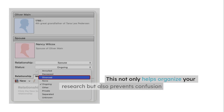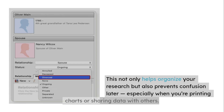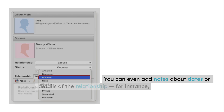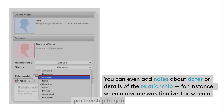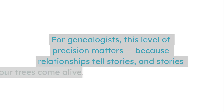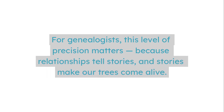This not only helps organize your research, but also prevents confusion later, especially when you're printing charts or sharing data with others. You can even add notes about dates or details of the relationship — for instance, when a divorce was finalized or when a partnership began. For genealogists, this level of precision matters, because relationships tell stories, and stories make our trees come alive.